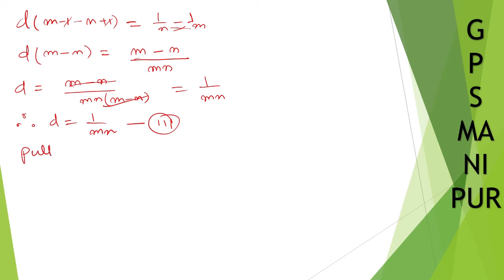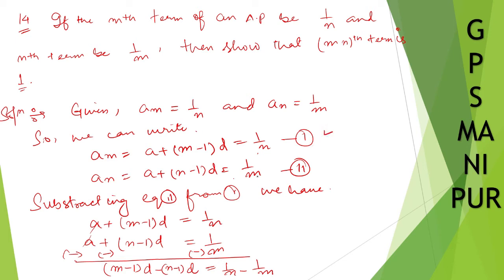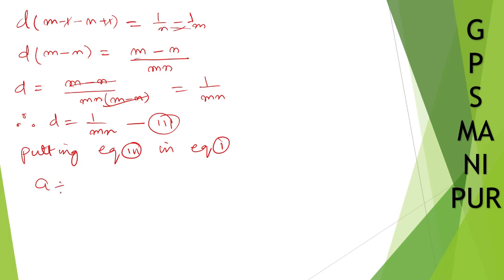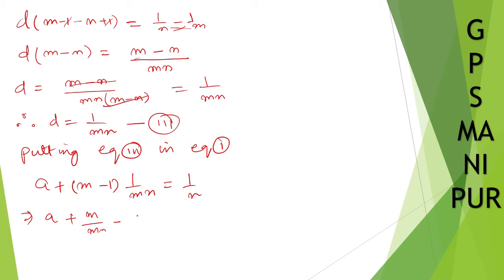Putting equation number 3 into equation number 1: a plus (m minus 1) times (1/mn) equals 1/n. Expanding: a plus m/mn minus 1/mn equals 1/n, which simplifies to a plus 1/n minus 1/mn equals 1/n.